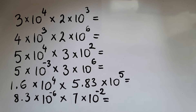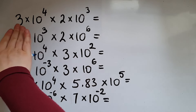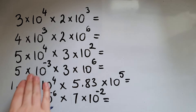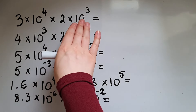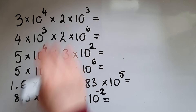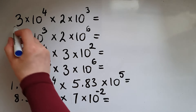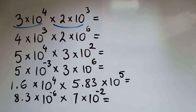In this video we'll learn to calculate with standard form. We've got 3 times 10 to the power of 4 times 2 times 10 to the power of 3, and we are multiplying these two.